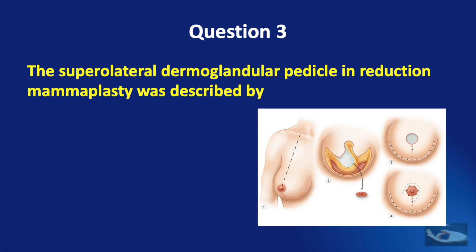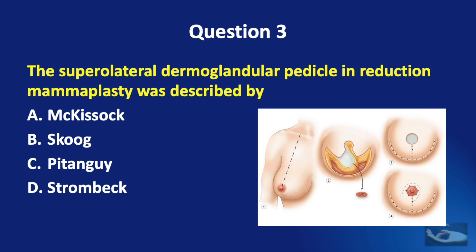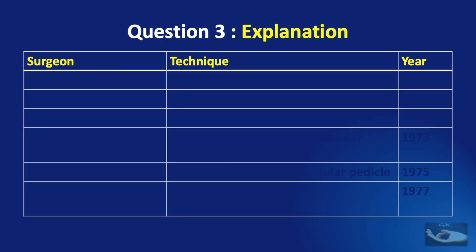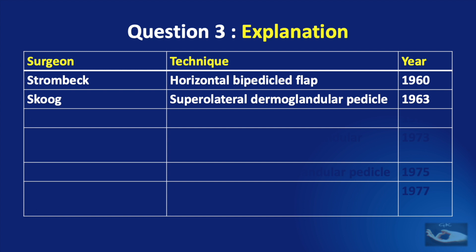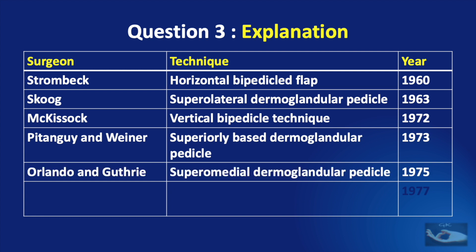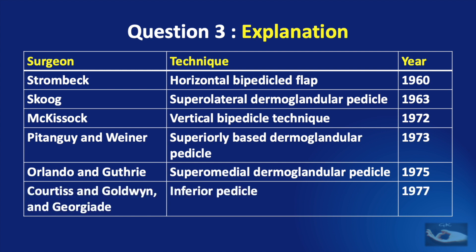Question No. 3. The superolateral dermoglandular pedicle in reduction mammoplasty was described by Mekisach, Skoog, Pitangi, or Strombeck? The correct answer is Skoog. Strombeck described the horizontal bipedicle flap in 1960. Skoog described the superolateral dermoglandular pedicle in 1963. Mekisach described the vertical bipedicle technique in 1972. Pitangi and Weiner described the superiorly based dermoglandular pedicle in 1973. Orlando and Guthrie described the superomedial dermoglandular pedicle in 1975. Curtis, Goldwyn, and Georgiard described the inferior pedicle in 1977.